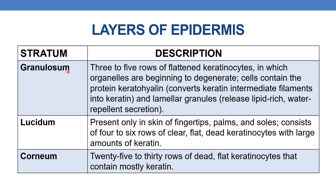The next layer is stratum granulosum, composed of 3 to 5 rows of flattened keratinocytes in which organelles are beginning to degenerate. The cells contain the protein keratohyalin, which converts keratin intermediate filaments into keratin, and lamellar granules that release a lipid-rich, water-repellent secretion.